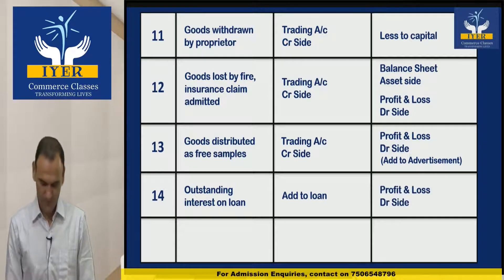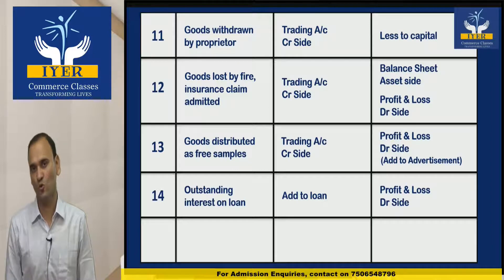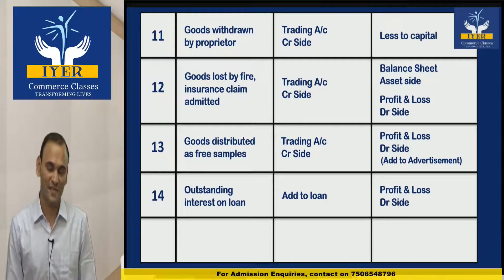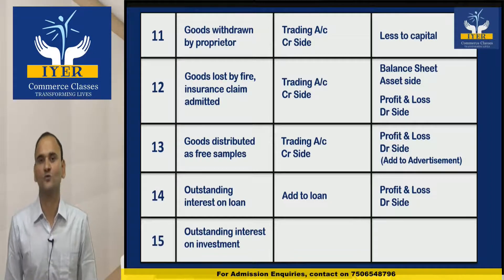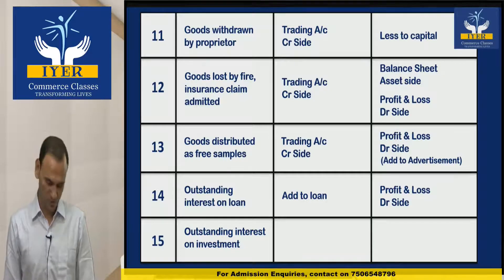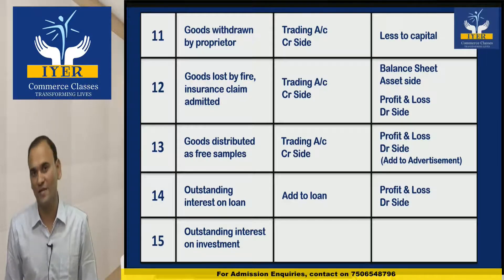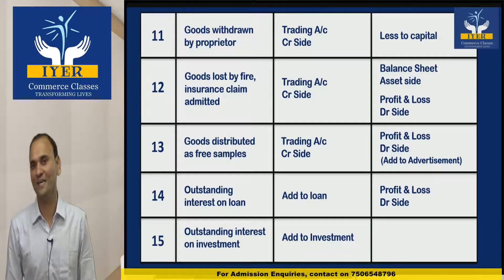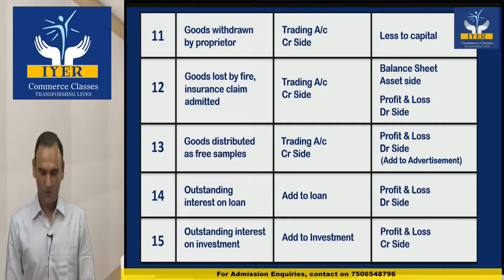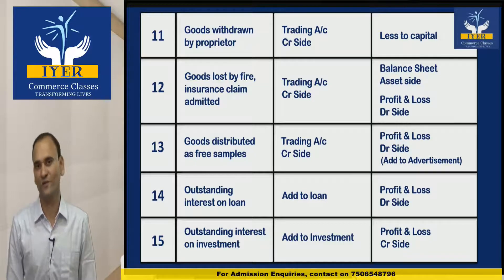Number 14 is Outstanding Interest on Loan. The two effects are: add to loan, and Profit and Loss debit side. Number 15 is Outstanding Interest on Investment, and the two effects are: add to investment, and Profit and Loss credit side.